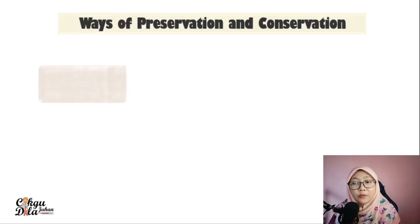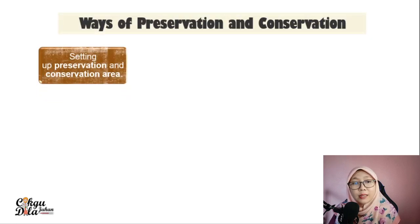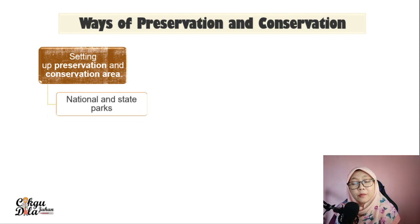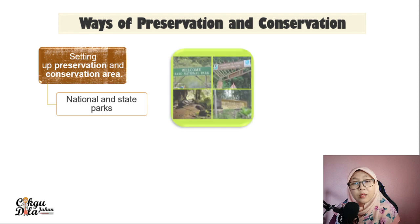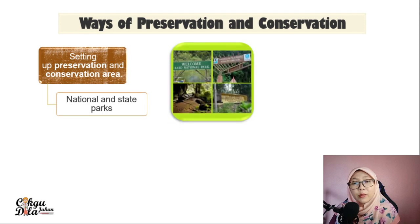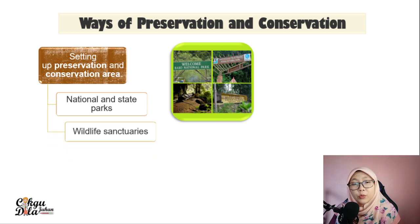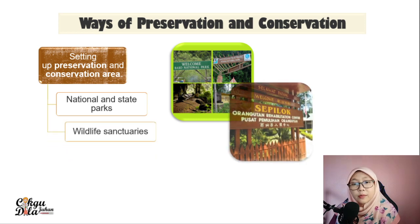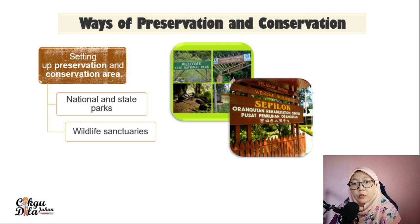Another way of preservation and conservation is setting up preservation and conservation areas. For example, national and state parks — we have the Bakul National Park and Hutan Rimba. We also have wildlife sanctuaries, such as the orangutan rehabilitation centre.